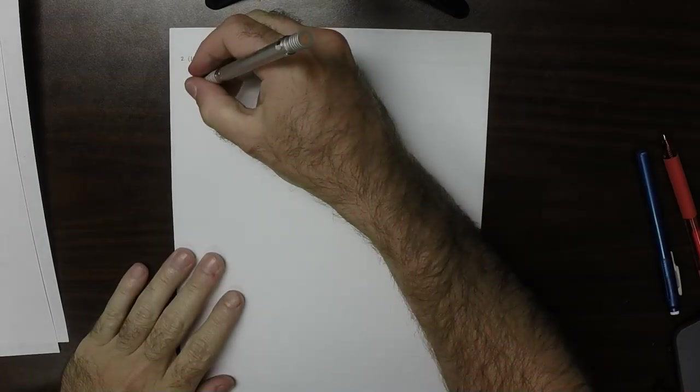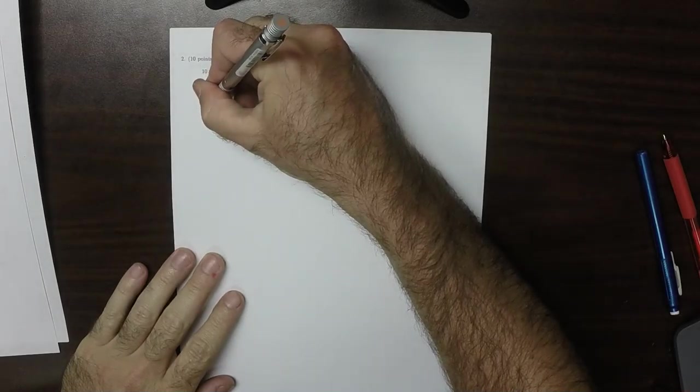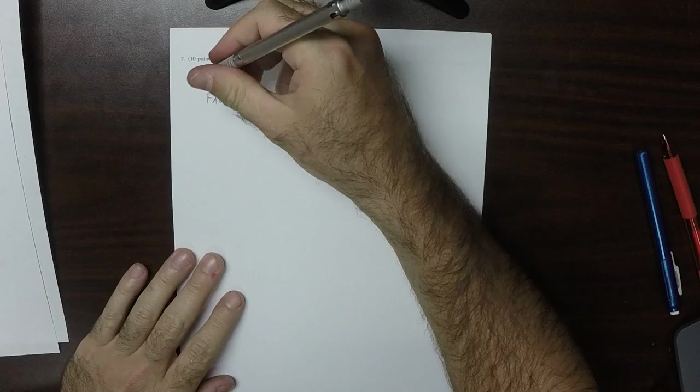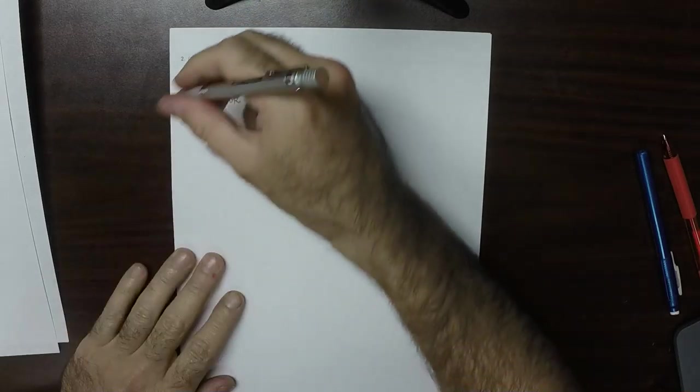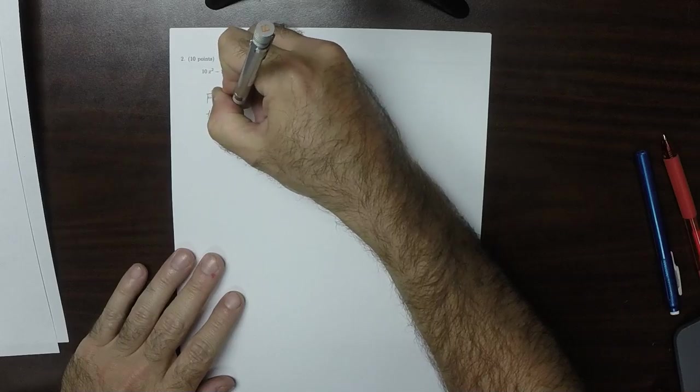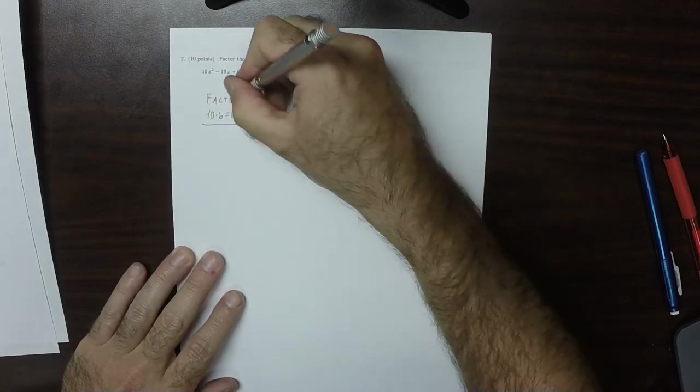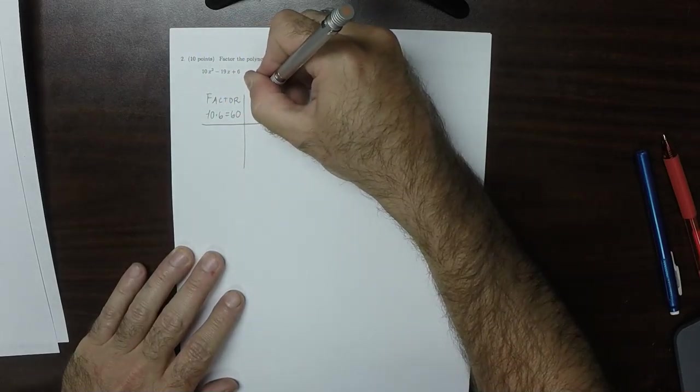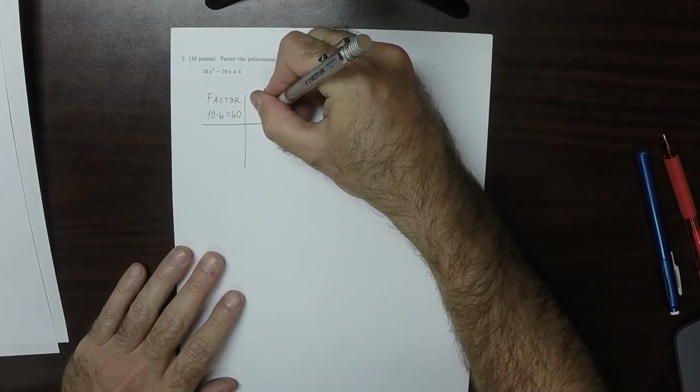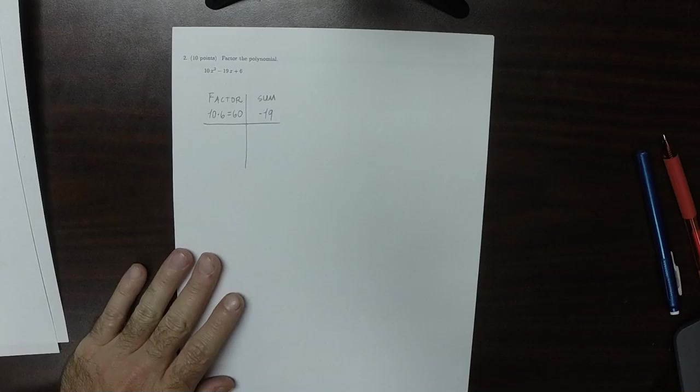Okay, so part 2, we're given a quadratic. It's not monic. To carry this out, what we want to do is we want to factor. We're going to find factors of 10 times 6. That is to say 60. Whose sum is the middle number. Negative 19.